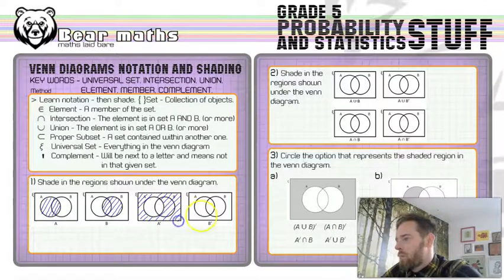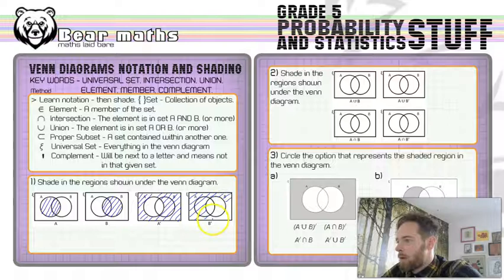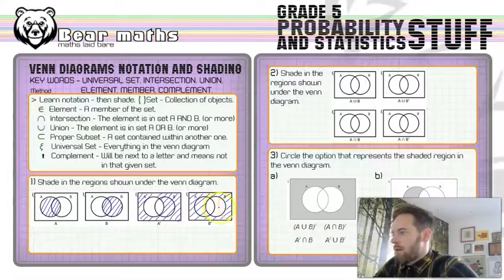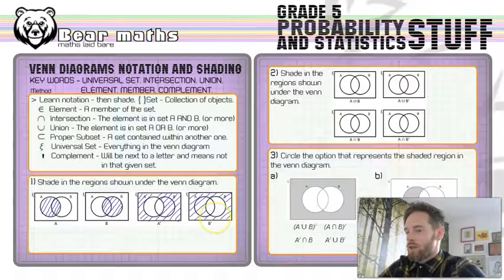And then the same follows for B. Do the same thing for B. Just leave B alone. Don't shade anything in B. It doesn't have to be beautifully done. It just has to indicate the bit that you need to indicate. So, pretty simple stuff with the first question there.